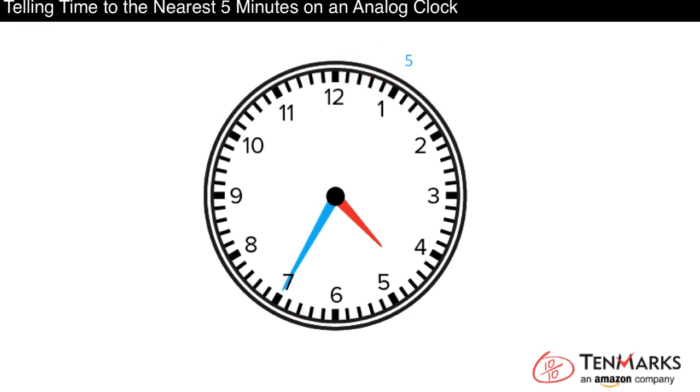When the minute hand points to the 1, we are five minutes into the hour. We can use the numbers on the clock to skip count by fives and see how many minutes have passed when the minute hand points to each number.